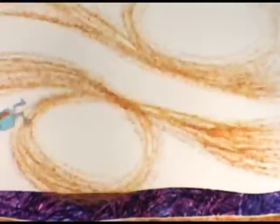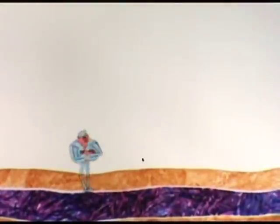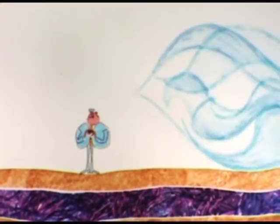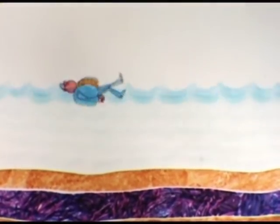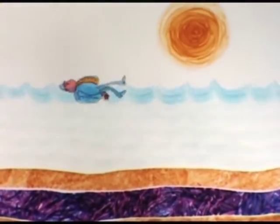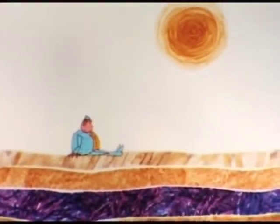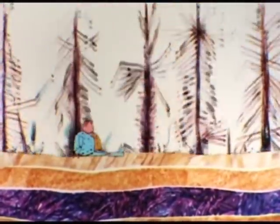Now you see, the winds blew and covered the swamps with sand. Then the sea came. Then the sun dried it up and left lots of salt, and so forth. This cycle continued for millions of years.